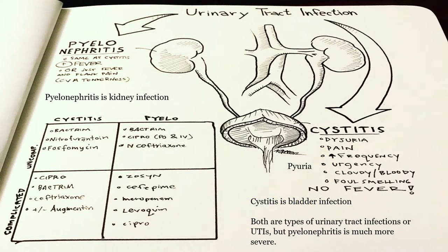Urinary tract infections are very common and there are two main ones to know: pyelonephritis and cystitis. Pyelonephritis is a kidney infection — it has fever, chills, and is much more serious. The patient will have flank pain as well as the symptoms of cystitis. Cystitis is a bladder infection and is very common. It presents with dysuria but no fever, increased urgency, and foul urine called pyuria.